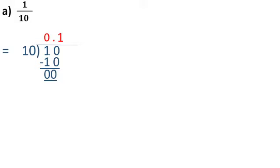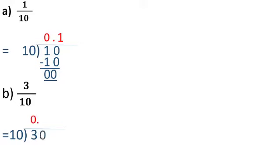One more example: 3 by 10. We have to divide 3 by 10. We cannot divide because 3 is smaller than 10, so put 0 point in the quotient, then take 0 in the dividend. Now dividend is 30. Divide 30 by 10 - 10 threes are 30, subtract - remainder 0. Quotient is 0.3. Can you tell me: 4 by 10? Decimal is 0.4. In the case of 9 by 10, decimal is 0.9. In the case of 6 by 10, decimal is 0.6.